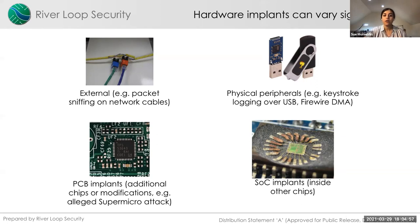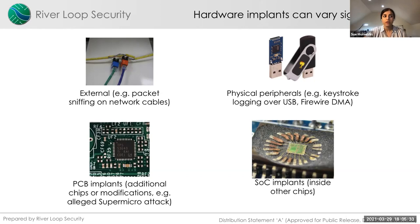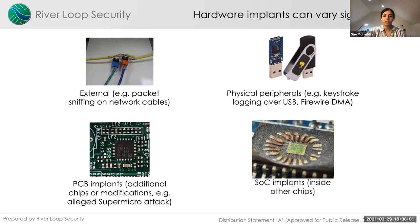Hardware trojans can be designed to do multiple things: modify firmware, modify data in transit on a serial bus, sniff or exfiltrate data — including cryptographic keys. They come in different forms: external packet sniffers on network cables, physical peripherals performing keystroke logging over USB, PCB implants as additional or modified chips on the board, or SoC implants inside the chip itself. Existing hardware quality assurances like imaging, X-ray, and JTAG don't actually seek to detect malicious variations, leaving a significant gap.